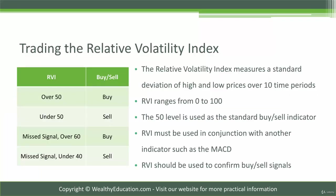The Relative Volatility Index measures a standard deviation of high and low prices over 10 time periods. The Relative Volatility Index, or the RVI, ranges from 0 to 100. The 50 level is used as a standard buy/sell indicator. Unlike some of our other volatility indicators, this one actually has a buy and sell indicator built into it. When the RVI goes above 50, this is a buy indicator, and when it drops under 50, this is a sell indicator.